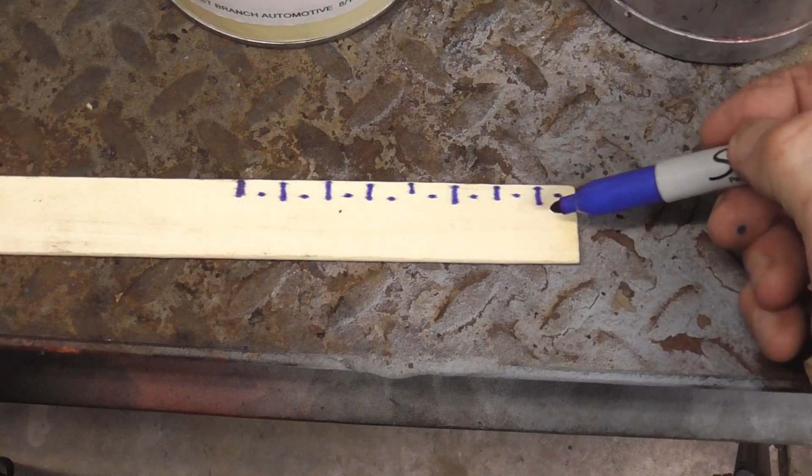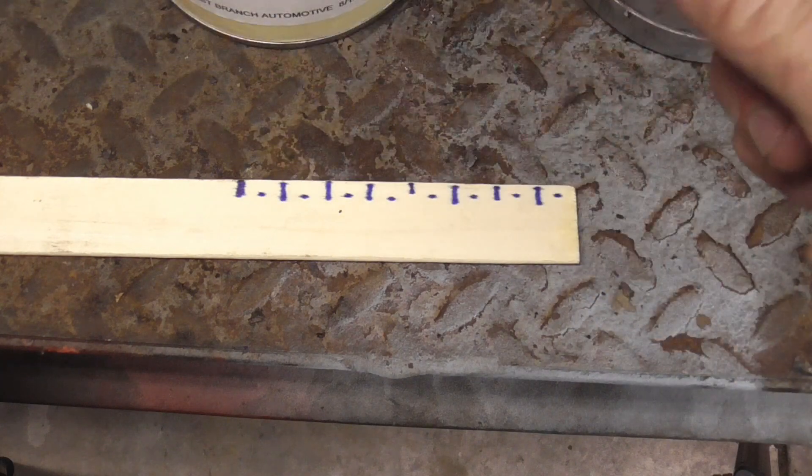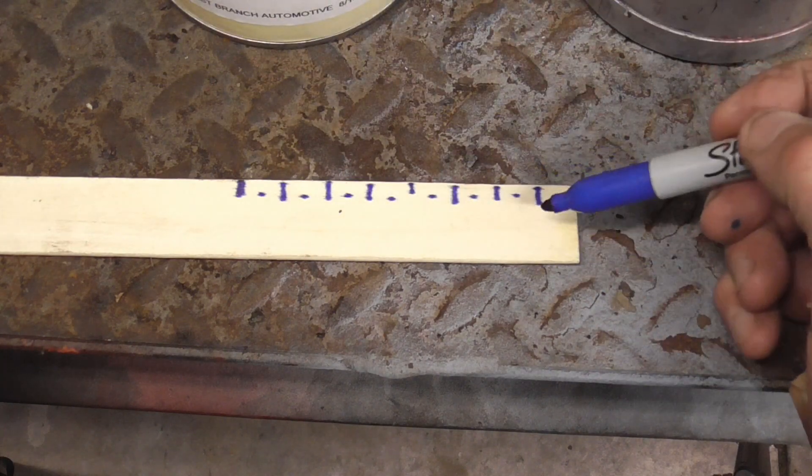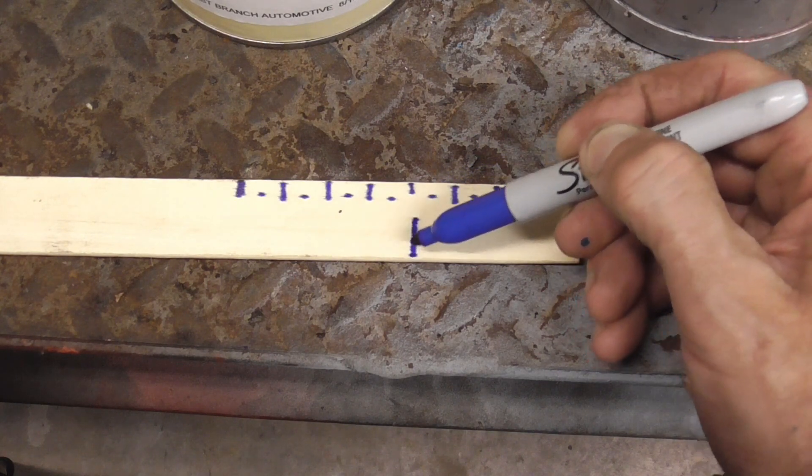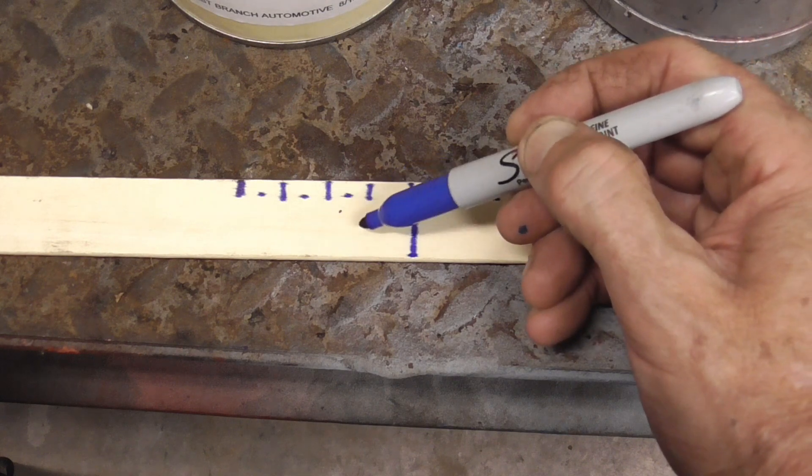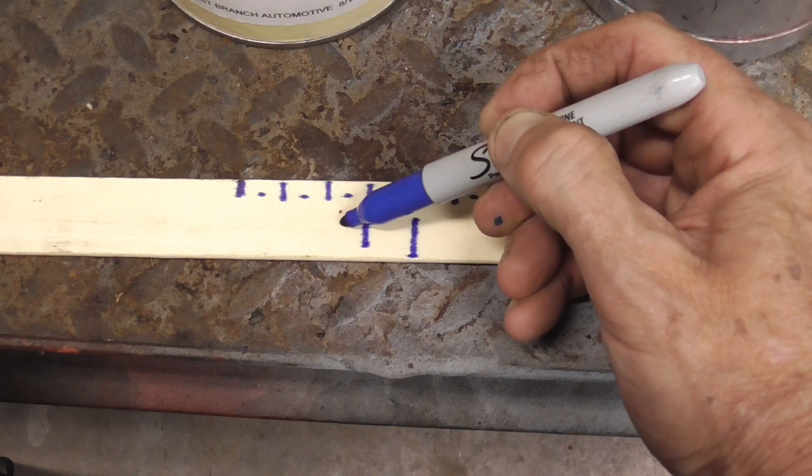So now I can do my eight parts paint, two parts reducer, and one part hardener. So I'm going to go two, four, six, eight—this will be the paint—then one, two parts reducer, and then one part hardener.